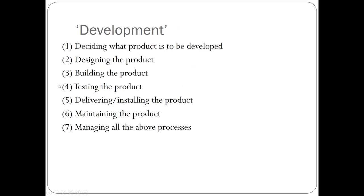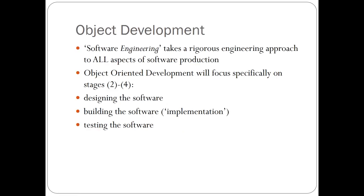With the development of software you have to go through the same stages of what you would know as the traditional systems life cycle. It's certainly not an expectation that I go through the full systems life cycle as part of this unit, but what you do need to understand is that all software is typically developed using phases two, three, and four — and that's what we're going to concentrate on. We will be specifically concentrating on the design of software, using something called UML, or the Unified Modeling Language. The build or implementation phase will be done using an object-oriented programming language, which in the case of this unit will be Java.